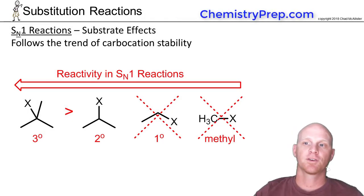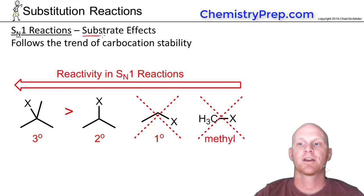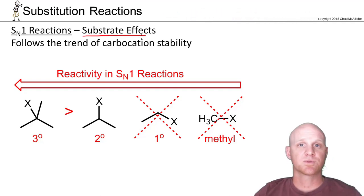So let's take a look at some of the factors affecting SN1 reactions. The first one we'll look at is substrate effects. With an SN2 reaction, we learned that sterics was a big deal with backside attack. But with SN1 reactions, we're not doing backside attack. It's all about the carbocation.